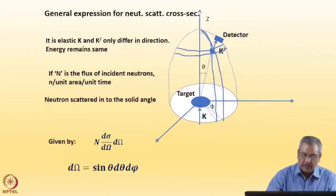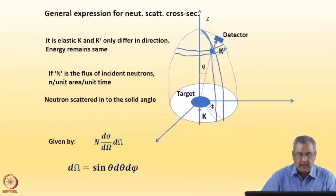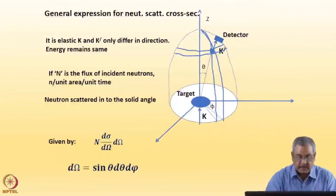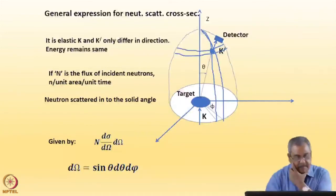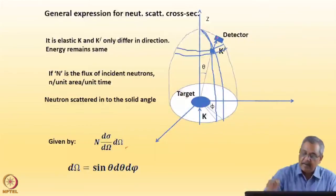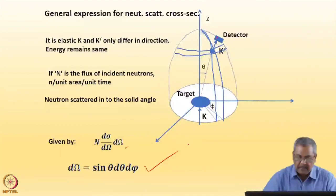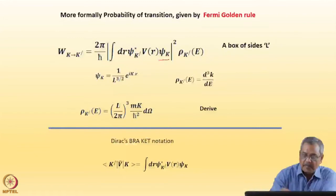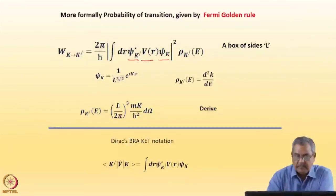If n is the incident number of neutrons per second, then n · (dσ/dΩ) · dΩ gives me the number of neutrons per second coming into the detector, where the solid angle is sin θ dθ dφ. Fermi's Golden Rule is about going from a state ψ_k under the perturbation by potential V(r) to a state ψ_{k'}. The square of the matrix element gives the probability amplitude squared, and ρ(k', E) is the density of states at k prime at energy E. For elastic scattering, E is the same for the incident and outgoing neutron. This gives the probability of transition.